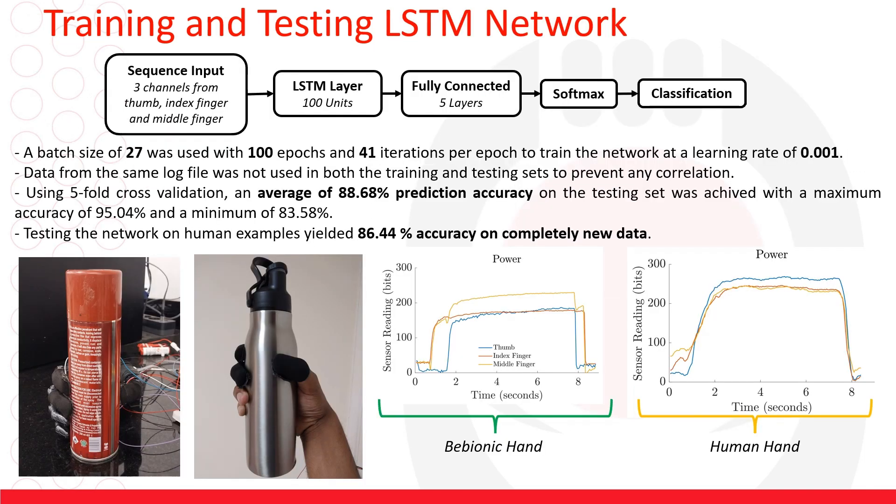The structure of the LSTM network is as shown here. Once we trained the network we used a five-fold cross-validation method and the average accuracy was 88.68 percent on the bionic hand samples and on the human hand samples we had 86.44 percent prediction accuracy.